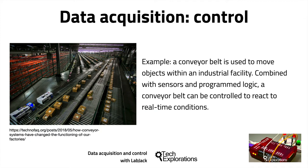Conveyor belts can move all kinds of objects from one place of a warehouse to another. Airport luggage, Amazon warehouses, distribution facilities, computer assembly lines, and even massive amounts of iron ore and coal are moved on conveyor belts. With a modern data acquisition and control system, a simple conveyor belt is transformed into a smart product highway.